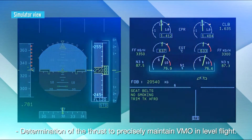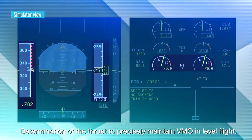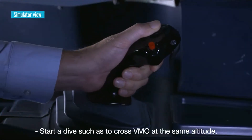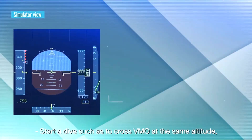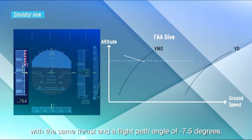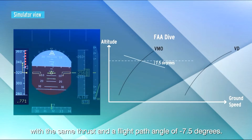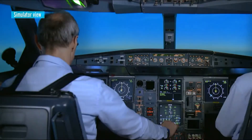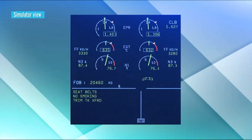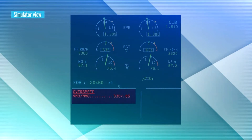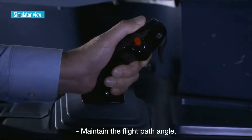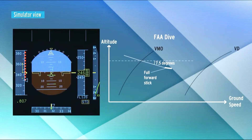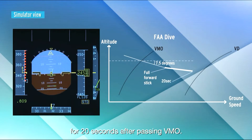First, determine the thrust to precisely maintain VMO in level flight. Then start a dive such as to cross VMO at the same altitude, with the same thrust and a flight path angle of minus 7.5 degrees. Maintain the flight path angle, or full forward stick if minus 7.5 degrees cannot be maintained, for 20 seconds after passing VMO.